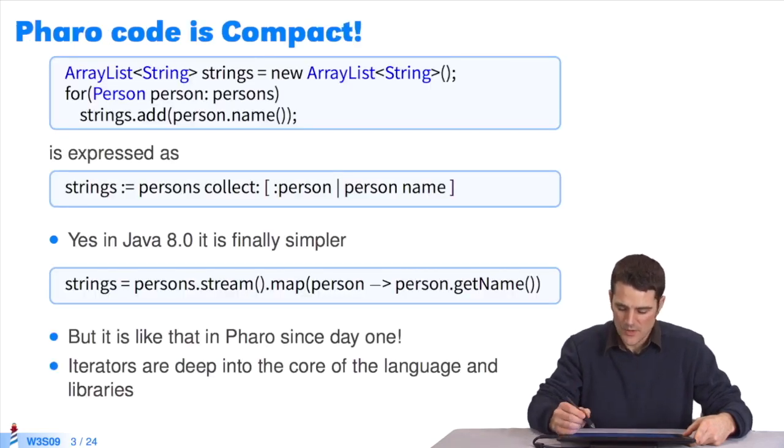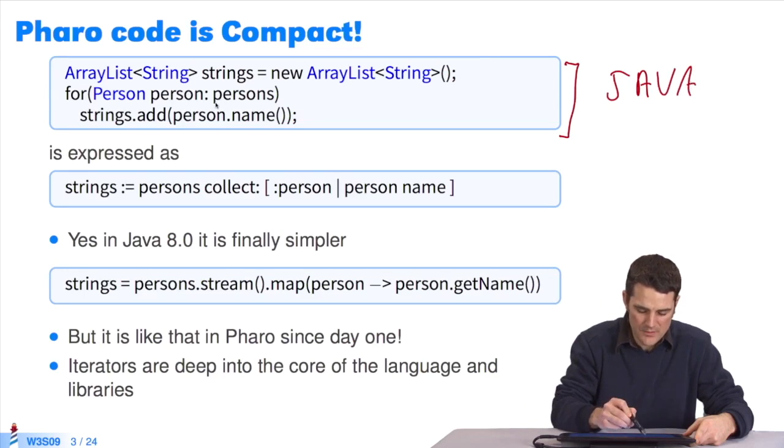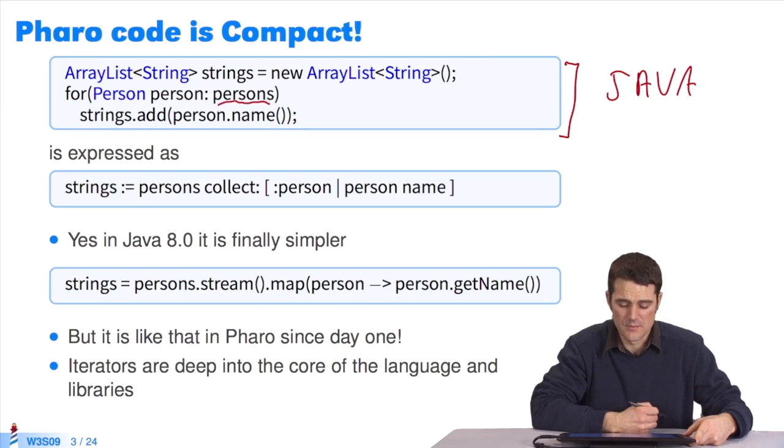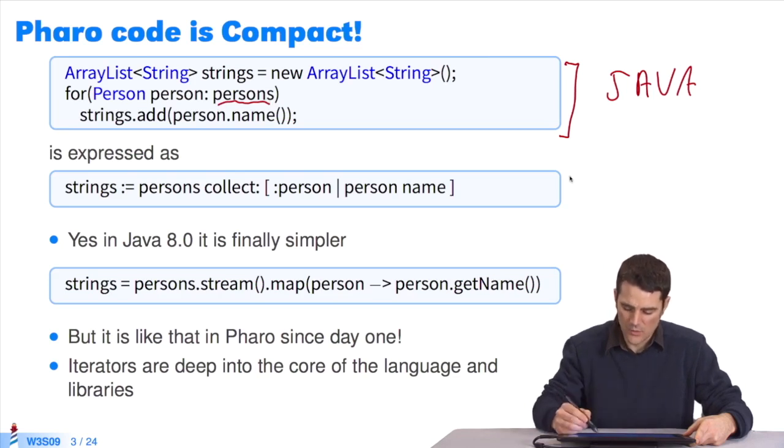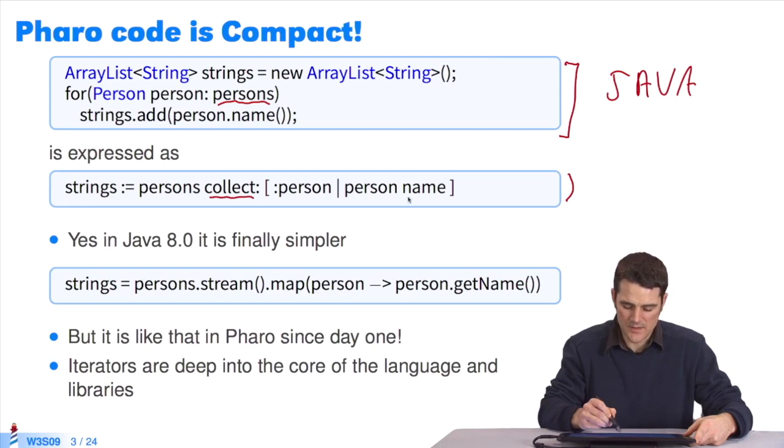An example first. This is the code you should write in Java to browse a collection. I'll browse the collection persons to extract the list of people, object persons. In Pharo, you'd write this code. You'd use the iterator collect. We'll talk about it later. You'll collect all the names of people.